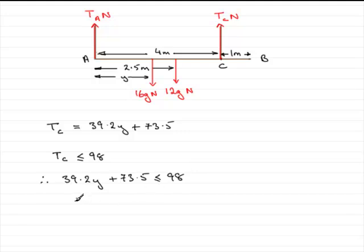So simply take 73.5 away from the 98 and divide both sides by 39.2 and what you have is y must be less than or equal to 98 minus 73.5 all divided by 39.2. Work that out on the calculator and you end up with y being less than or equal to 0.625.